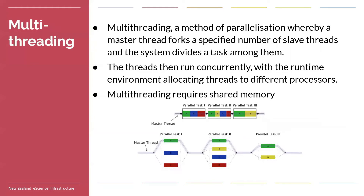First up, let's look at multi-threading. Multi-threading is a method of parallelization where a master thread forks into a specified number of slave threads and divides the tasks among them. These threads run concurrently in a shared memory environment, which allows for communication between the threads via the shared memory. This means that when using multi-threading alone, you are limited to the amount of CPUs available in a single node, since the CPUs must be in a shared memory environment.